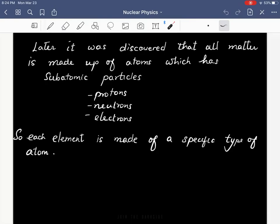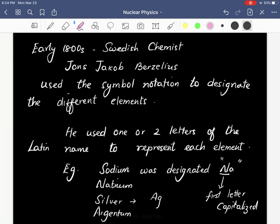Later it was discovered that all matter is actually made of atoms which have subatomic particles—protons, neutrons, and electrons. Each element is made of a specific type of atom. In early...